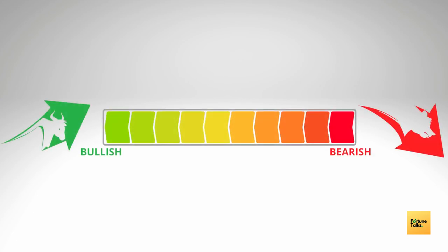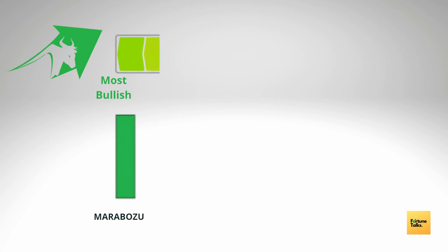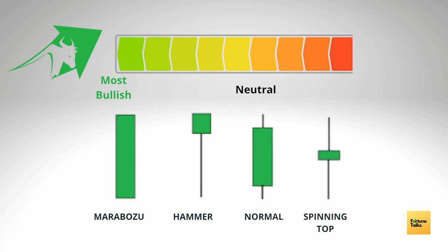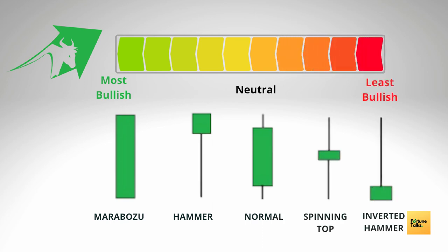Now let us arrange the candlesticks from strongest to weakest. First we will consider the bullish candles and arrange them in the order of their strength, and then let us arrange the bearish candlesticks in the order of their strength from strongest to weakest.